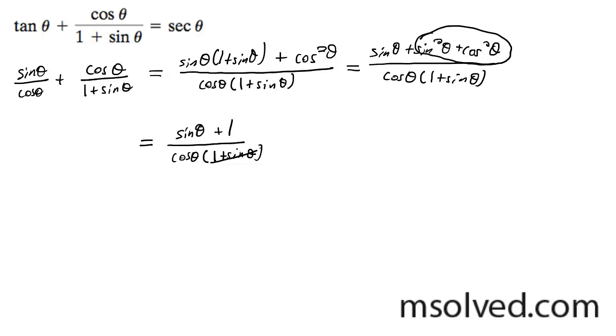All these terms are common. I can cancel them out to get one. You end up with one over cosine theta, which is equal to the secant of theta. There we have it. We just proved it.